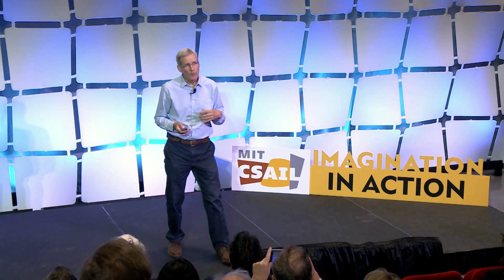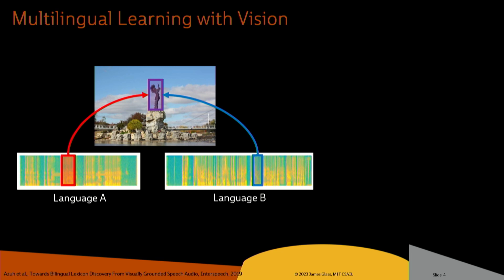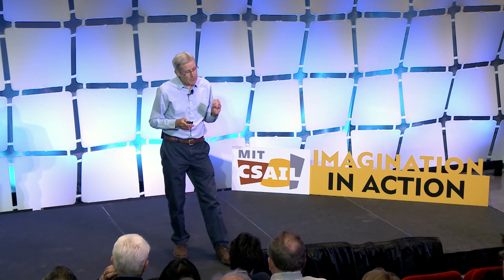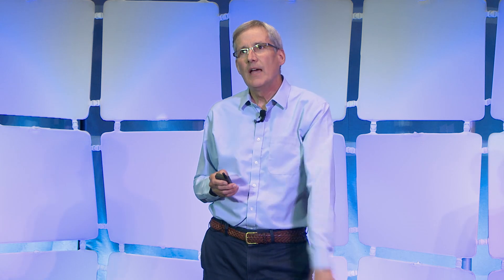The other interesting thing is we did this original work in English, but it works on any language. You can use an image as a kind of interlingual Rosetta Stone. If you have multiple languages, you can have people in different languages independently talking about what they see in the picture — they don't have to say the same thing. By modifying the original architecture to include branches for different languages and jointly learning a high-level semantic embedding space, you can make connections between the languages without any direct connections between them.